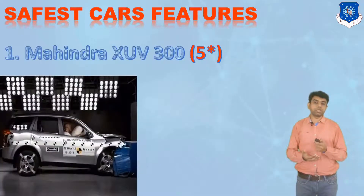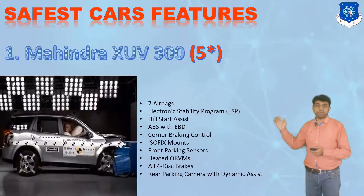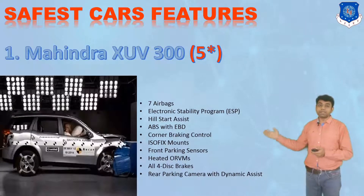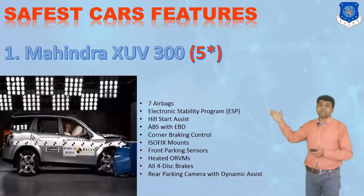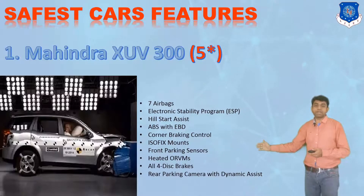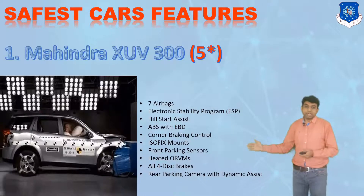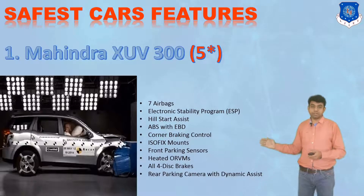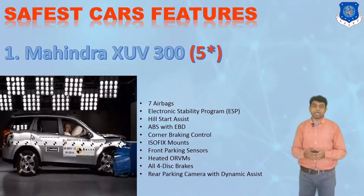The first car is the Mahindra XUV, which has a 5-star rating based on its safety systems. It has 7 airbags, electronic stability programs, hill start assist so the car remains stable during hill driving, ABS with EBD, corner braking control, ISOFIX mounts, front parking sensors — not just rear but frontal parking sensors as well — heated ORVMs so vision is not disturbed in rainy conditions, all four disc brakes, and a rear parking camera with dynamic systems.